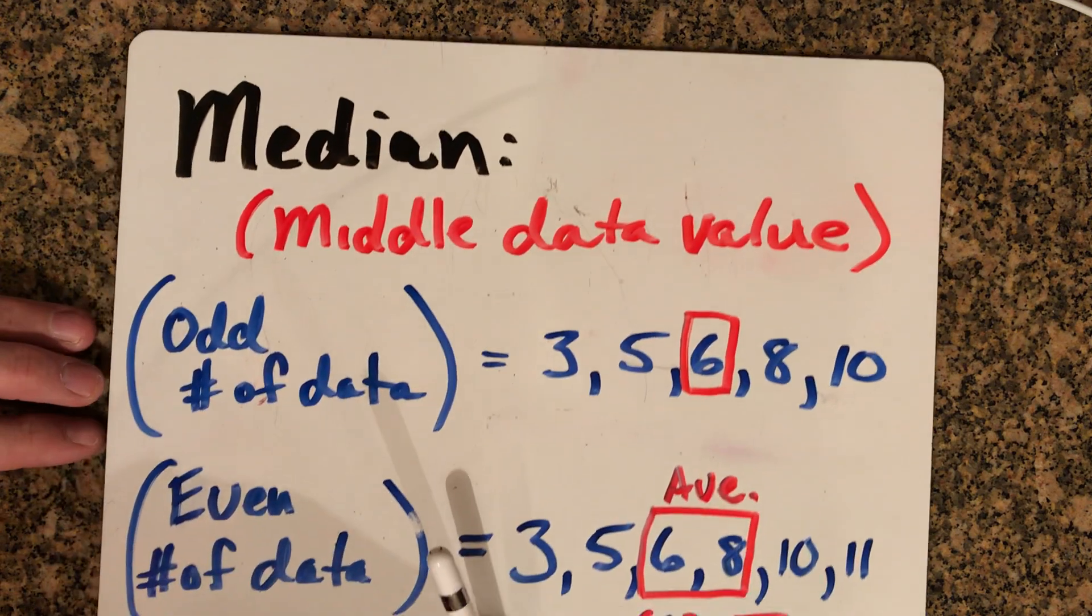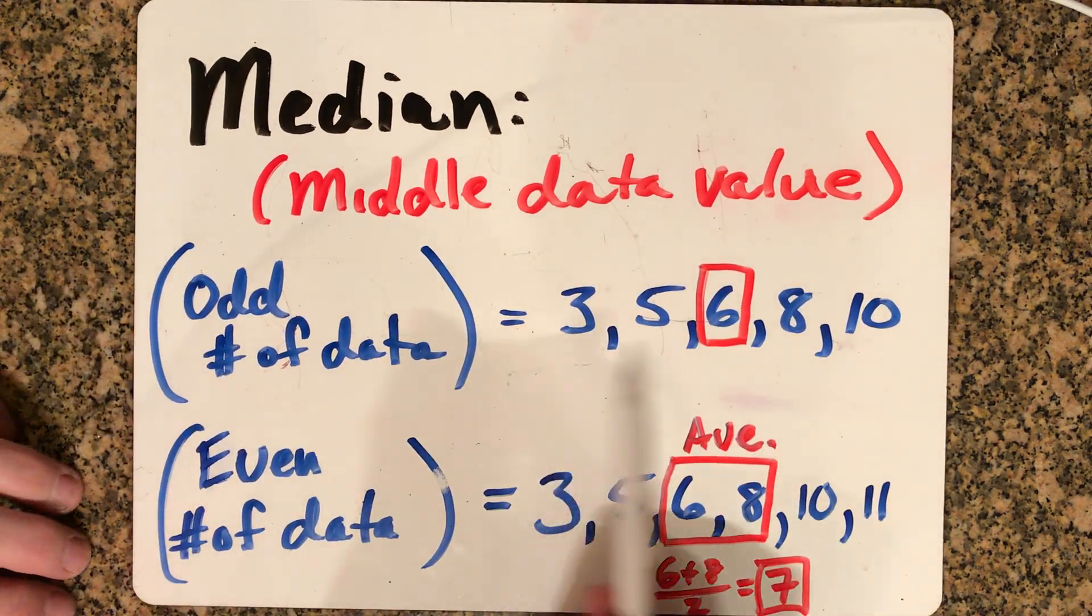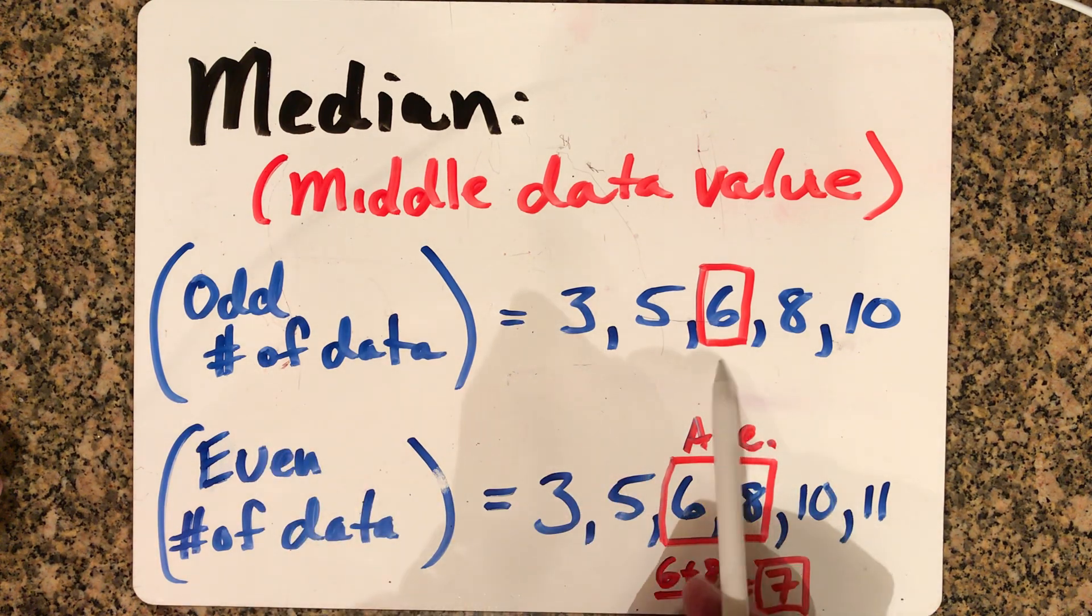Next, the median. That's another form of our center of data. We find the median by looking at a set of numbers and finding the middle number. If you have an odd number of data values, that middle number will be by itself.